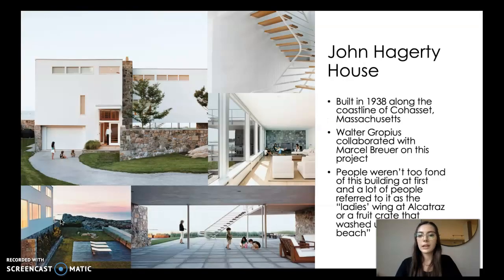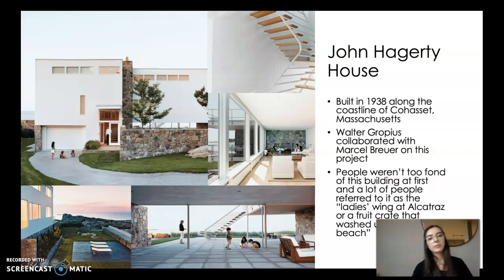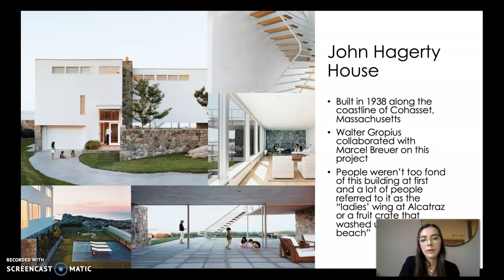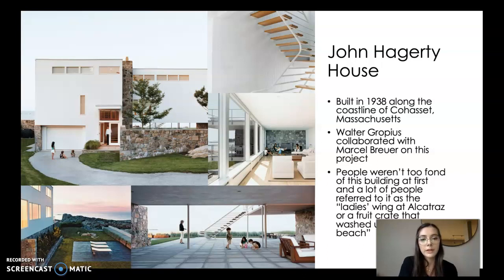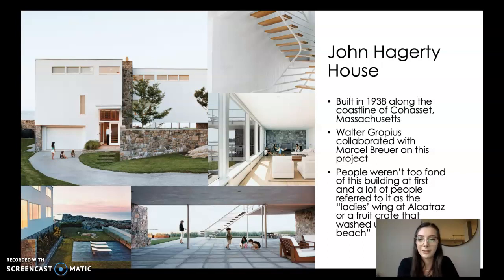Some of his architecture: the first one, and one of my favorites, is the John Haggerty House. This one was built in 1938 along the coastline of Massachusetts. When I was doing my research I saw that you can't get a permit anymore to build this close to the water, which is pretty neat. Walter Gropius actually collaborated with Breuer on this one, and people weren't too fond of it at first — a lot of people referred to it as the 'ladies wing at Alcatraz' or a 'fruit crate that washed up on the beach.' So I disagree — this is one of my favorite pieces. What do you guys think?